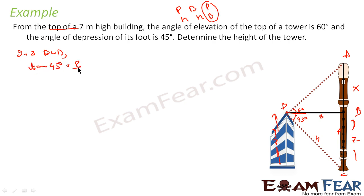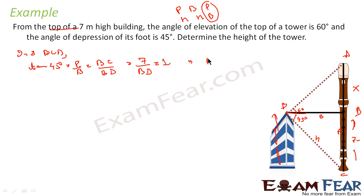In triangle BCD, with the 45° angle as the frame of reference, the perpendicular is BC and the base is BD. Using tan 45° = P/B = BC/BD = 7/BD, and since tan 45° = 1, we get BD = 7.